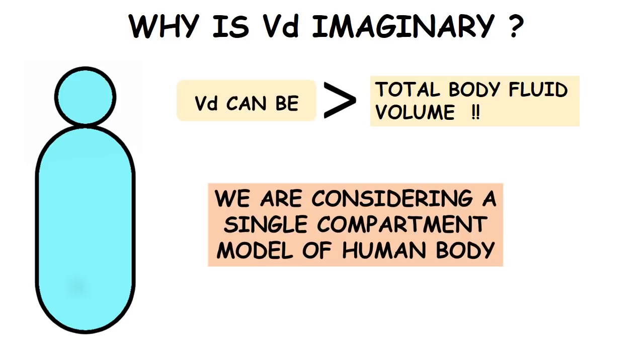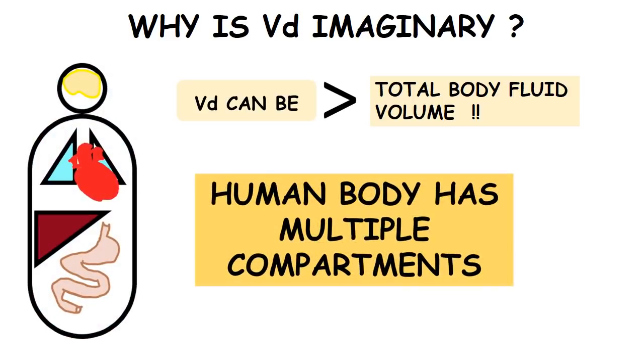Our body is basically multi-compartment, that means there are different types of tissues and partitions in our body like liver, intestine, heart, kidney, bones, etc., and when a drug is given it may attain different concentrations in the different parts of the body.